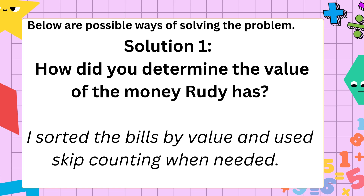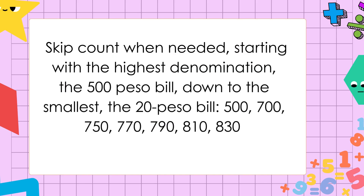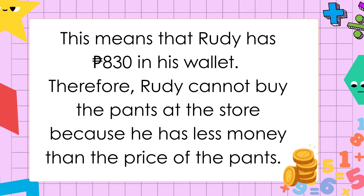Here are the possible ways of solving the problem. Solution 1: Sort the bills by value and use skip counting when needed, starting with the highest denomination — the 500 peso bill — down to the smallest, the 20 peso bill. Like this: 500, 700, 750, 770, 790, 810, 830. This means that Rudy has 830 pesos in his wallet. Therefore, Rudy cannot buy the pants at the store because he has less money than the price of the pants.